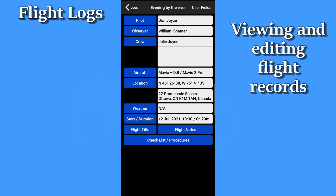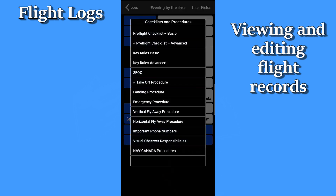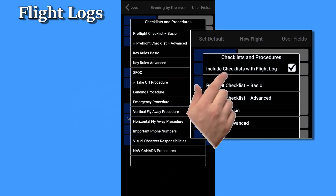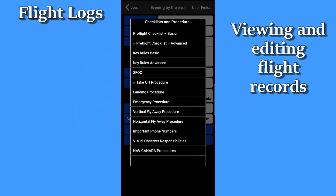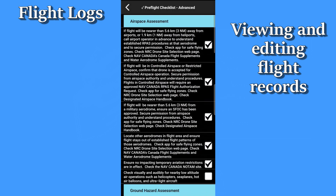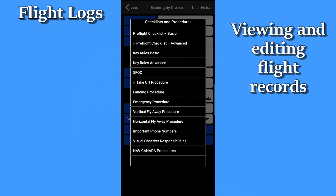When you tap on the checklist button, and you had selected save checklists with flight log when you did the flight, the checklists you had used will have a little tick mark beside them. You can update your checklist records, if you desire, even if you had not saved them from your actual flight.